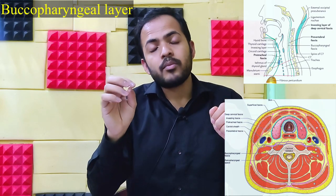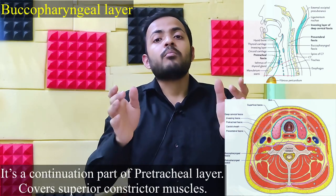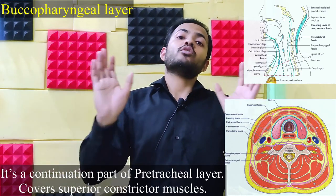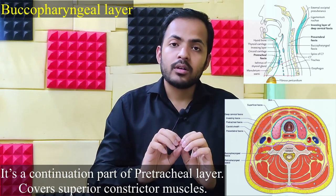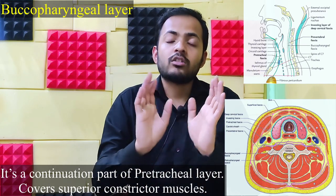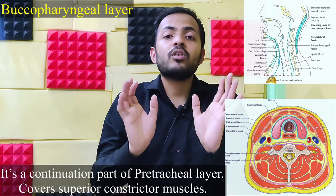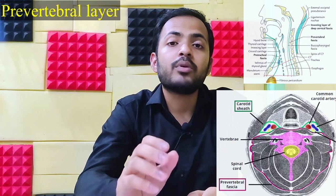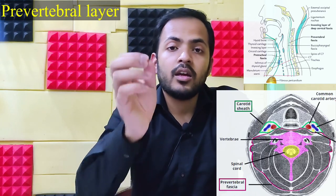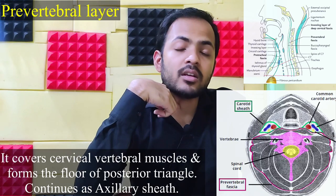The buccopharyngeal fascia is basically a continuation of the pre-tracheal layer, posterior to the esophagus. This buccopharyngeal layer covers the superior constrictor muscles only. Now, while I mention the pre-tracheal layer, buccopharyngeal layer, and the investing layer — these are all separate kinds of fascia but are actually parts of the deep fascia of the neck.